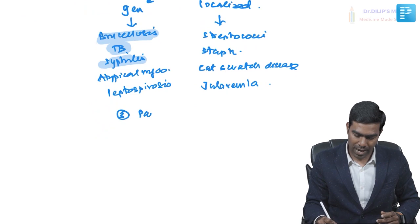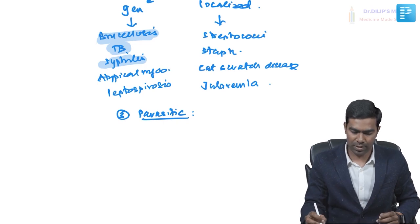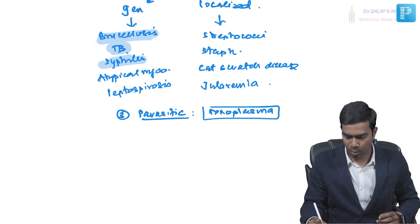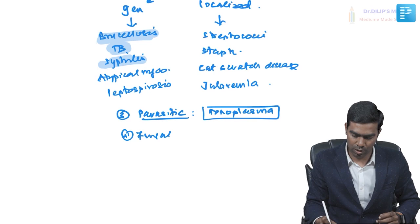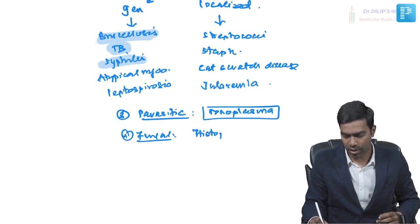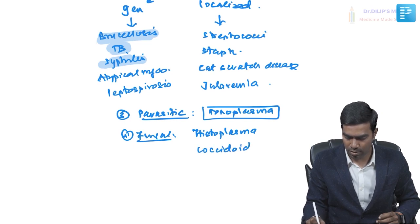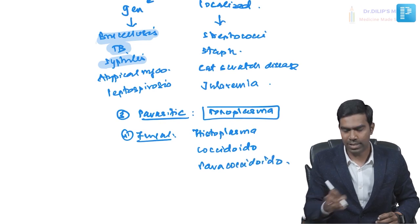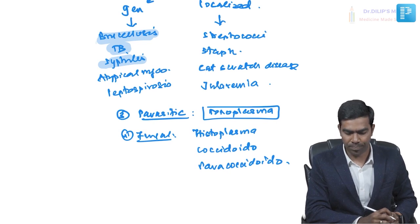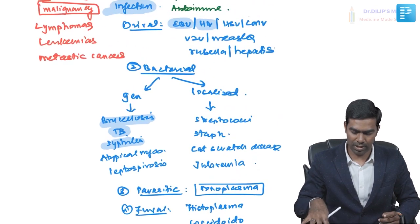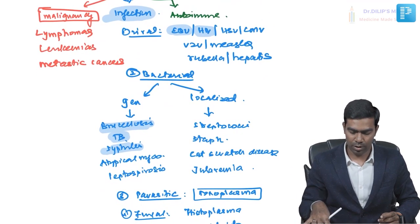Third, parasitic infections causing lymphadenopathy — toxoplasma is the most important in this group. Finally, fungal infections causing lymphadenopathy include histoplasmosis, coccidioidomycosis, and paracoccidioidomycosis. Blastomycosis can sometimes cause it too. These are the fungal infections that generally cause lymphadenopathy.